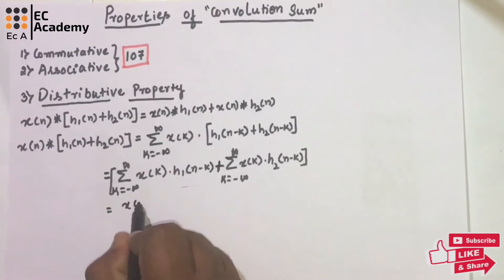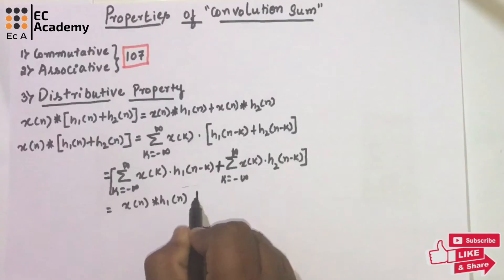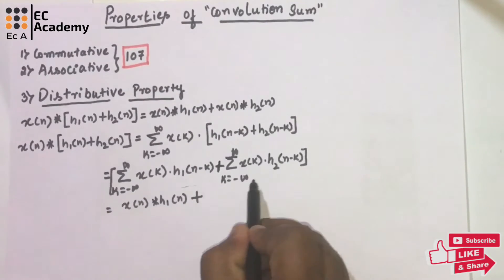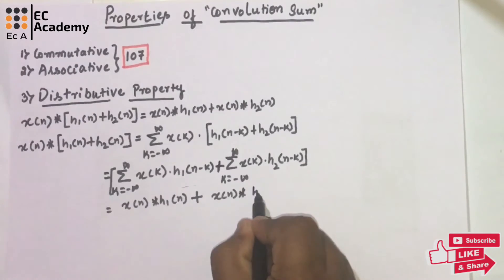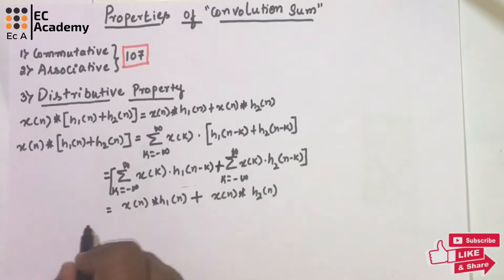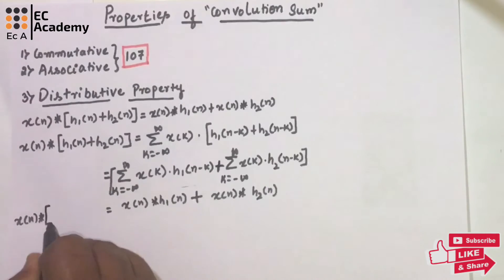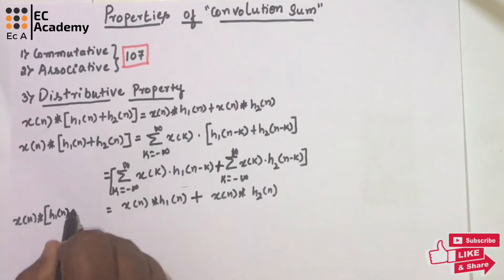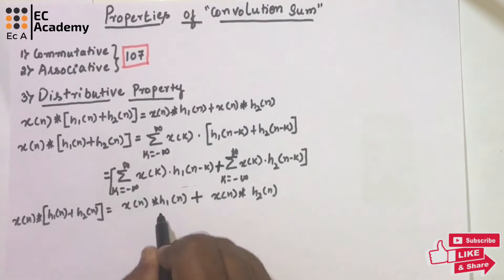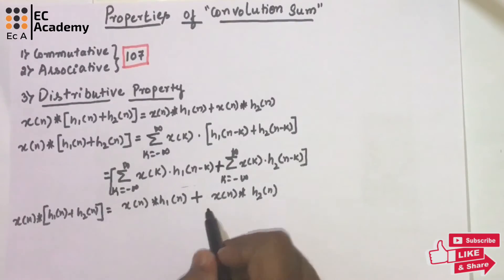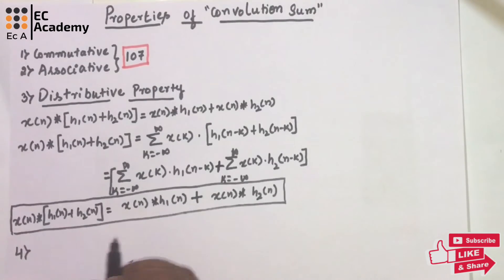The first part of the equation can be written as x(n) convoluted with h1(n), and the second part as x(n) convoluted with h2(n). So we have proved that x(n) convoluted with h1(n) plus h2(n) equals x(n) convoluted with h1(n) plus x(n) convoluted with h2(n).